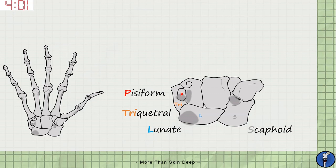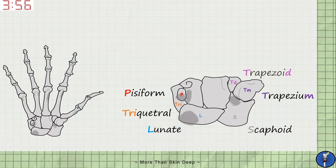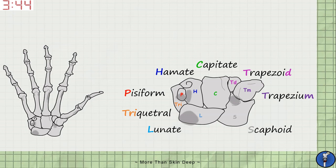From lateral to medial on the distal row, we have the trapezium, which articulates with the thumb, the trapezoid, the large capitate and the hamate, which has a hook similar to the scaphoid tubercle, known as the hamulus. Remember that the trapezium is closer to the thumb, as they both end in 'um'.